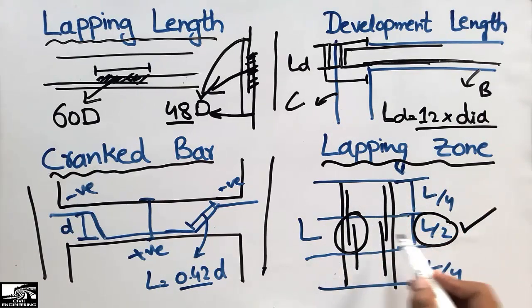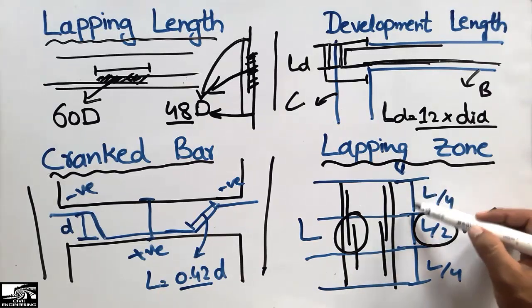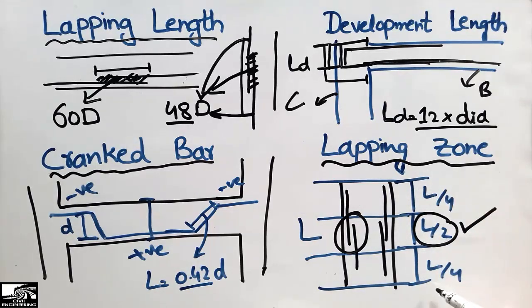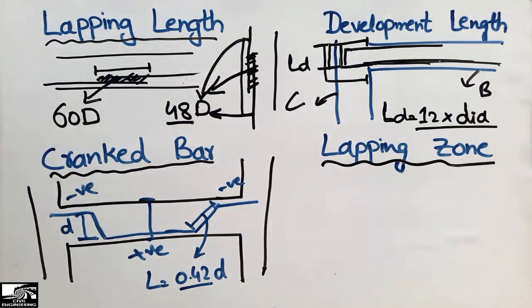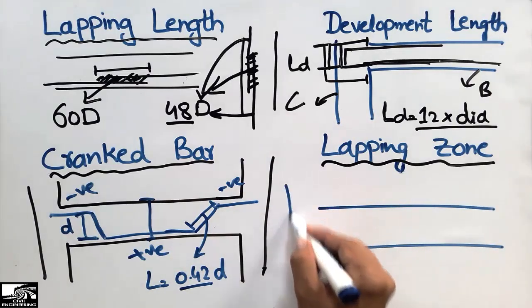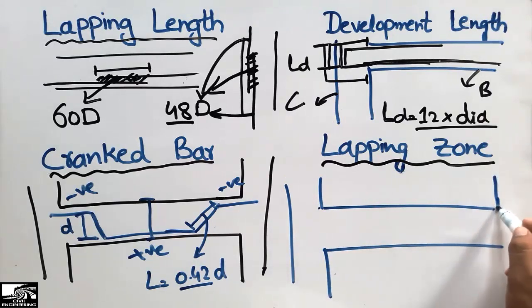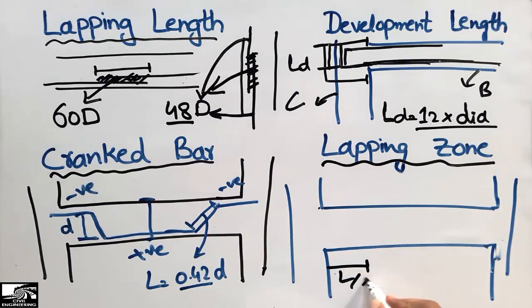So the lapping zone for columns is the middle L/2, subtracting L/4 from the top and L/4 from the bottom — overlapping of steel bars in those two end regions is not permitted. In the case of a beam with two column supports, the overlapping zone is L/8 from one support and L/8 from the other support.